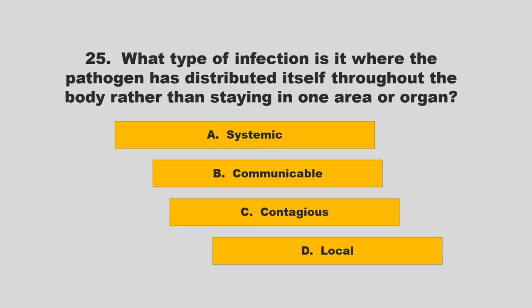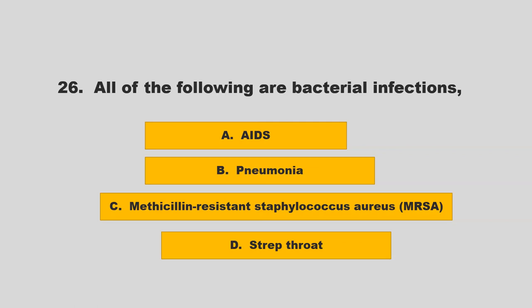What type of infection is it where the pathogen has distributed itself throughout the body rather than staying in one area or organ? Options: systemic, communicable, contagious, or local. The correct answer is A: systemic.